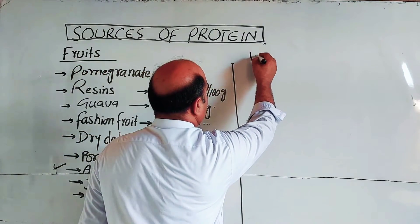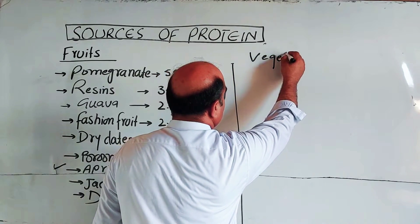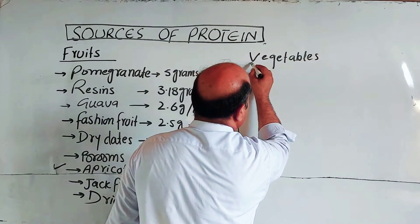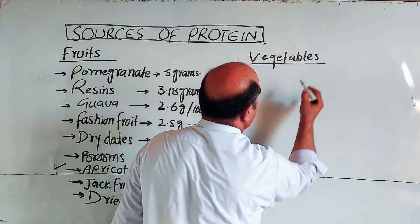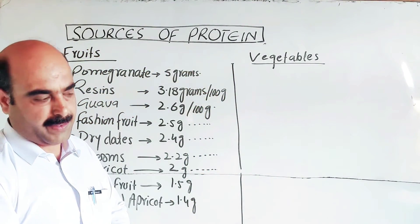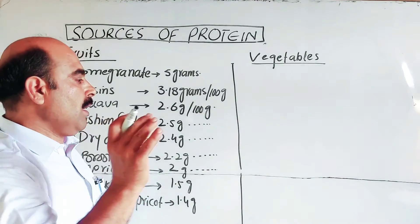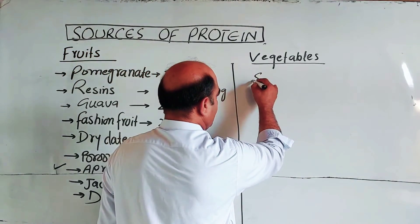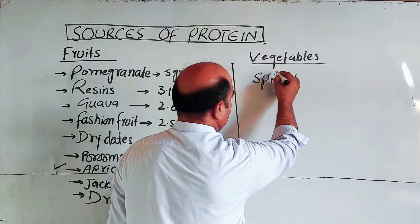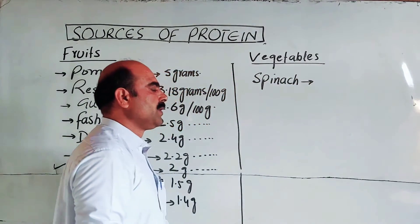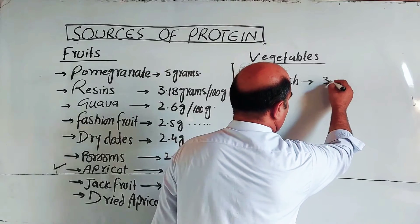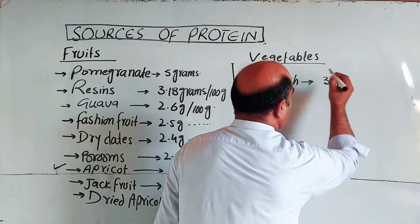Now moving to vegetables. Vegetables are also a protein source. Among vegetables, spinach is an important one. Salad vegetables are also included.